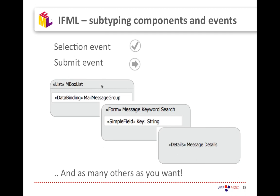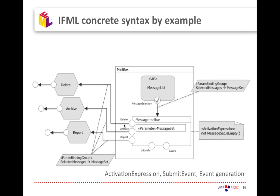IFML can be made even more detailed because it also implements an extensibility mechanism where you can define your own extensions to the language. In particular, you can extend the kinds of events — you can invent your own types of events described by an icon inside the basic event icon — and also other kinds of components. Here we have an extension showing that components can be lists, forms, details elements, and so on. The analogous thing can be done for component parts — for a form, for example, you would have a specific new component part that is the field for the form.